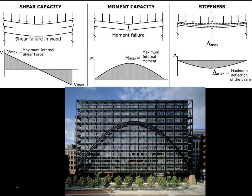There are three major issues that we worry about in anything that's in bending: shear capacity, which we discussed in the previous video; moment capacity, which we touched on relative to how we're shaping the cross-section; and stiffness — too much movement can be distracting or can cause cracking of brittle elements in the system.